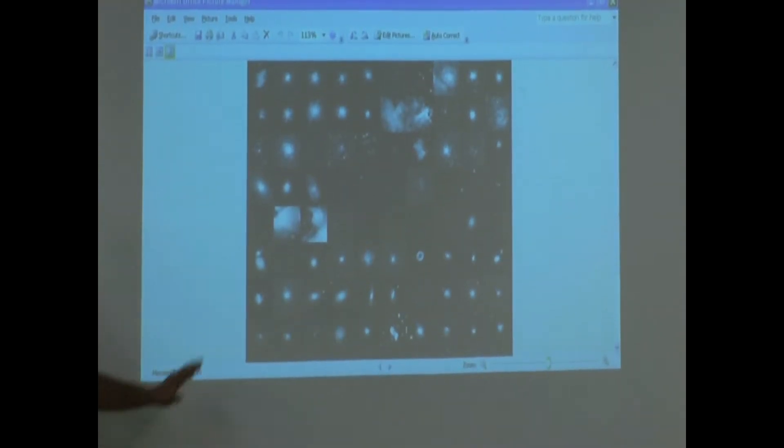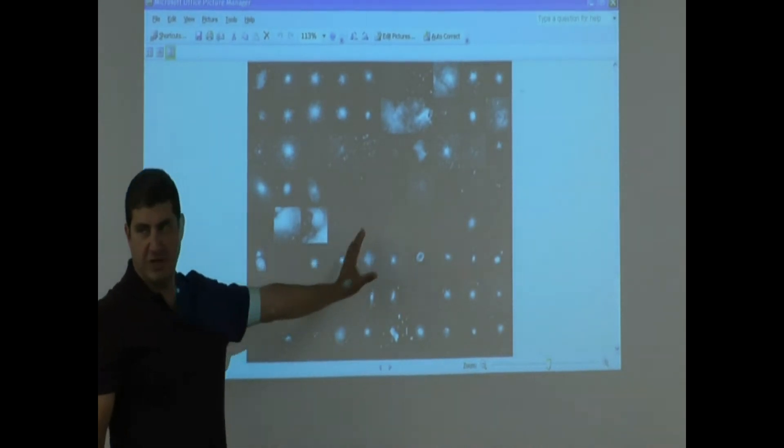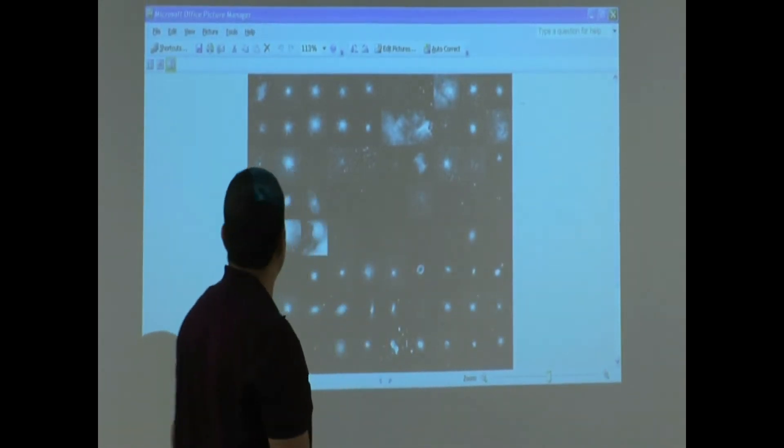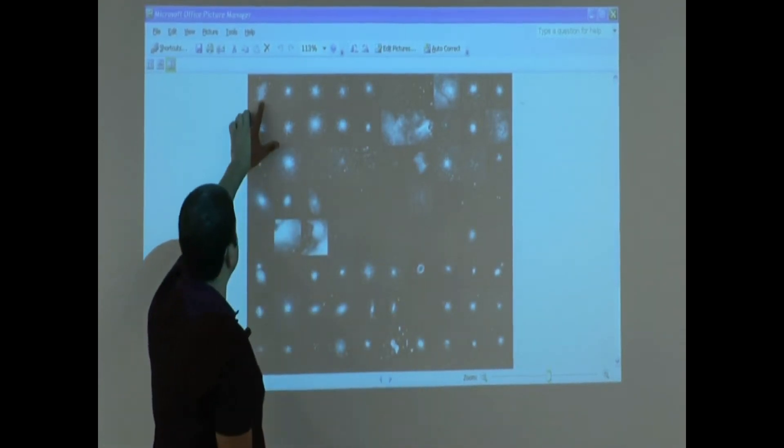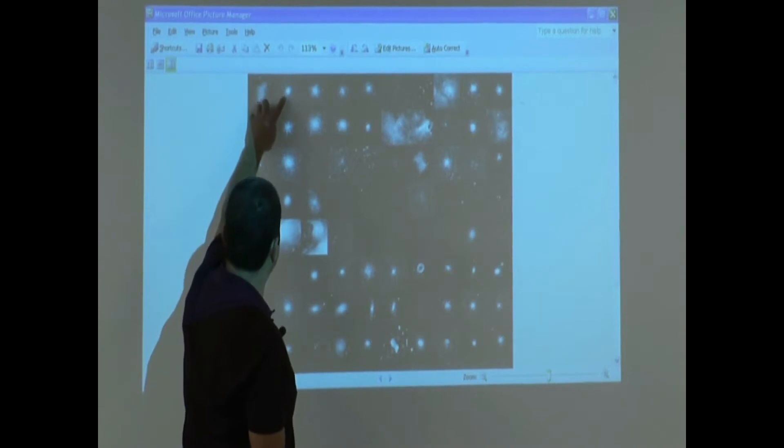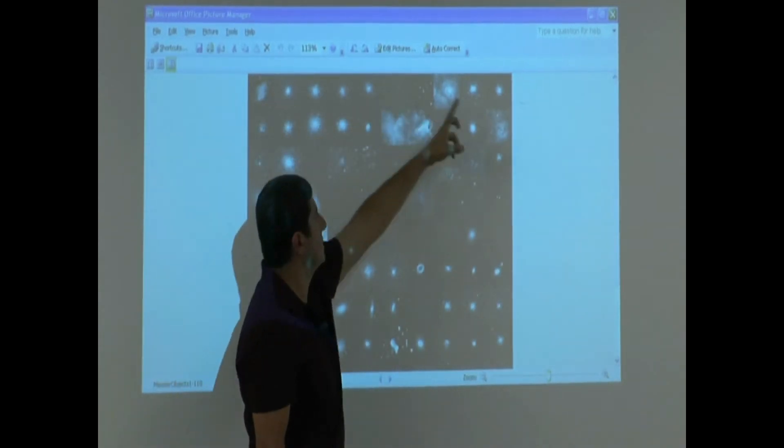They took all of the Messier object pictures and then they made a whole collage out of them. So this is Messier object number one, Messier object number two, three, four, five, and then so on.